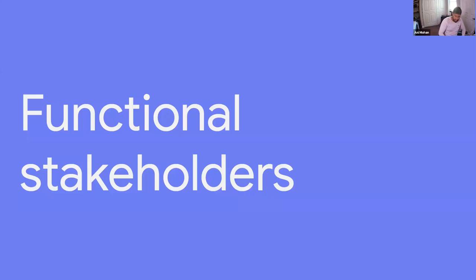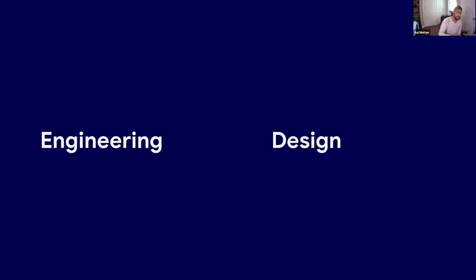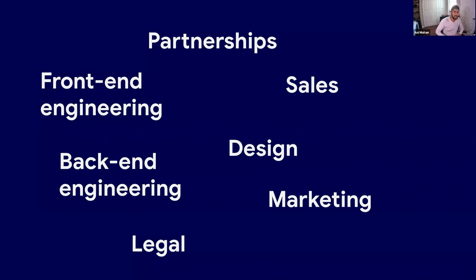The third thing I wanted to talk about that can very much impact the PM role are the functional stakeholders you work with — who are the different categories of people within the company you spend a lot of time with on a day-to-day basis? Most PMs primarily think about engineering and design — the folks building the product and the folks envisioning what it looks and feels like. But the reality within most organizations is a lot more complex. There are also partnerships, sales, marketing, legal, and operations functions, among others. Different PMs get energy from working with different functions.